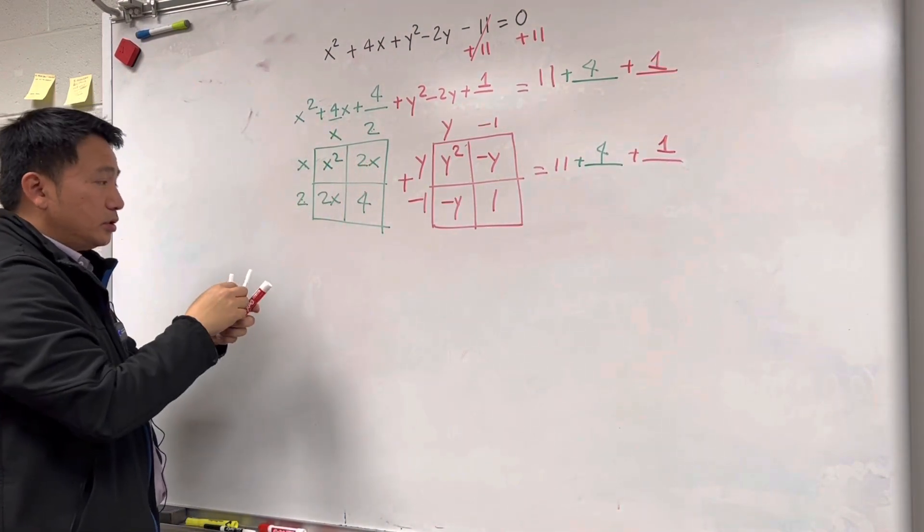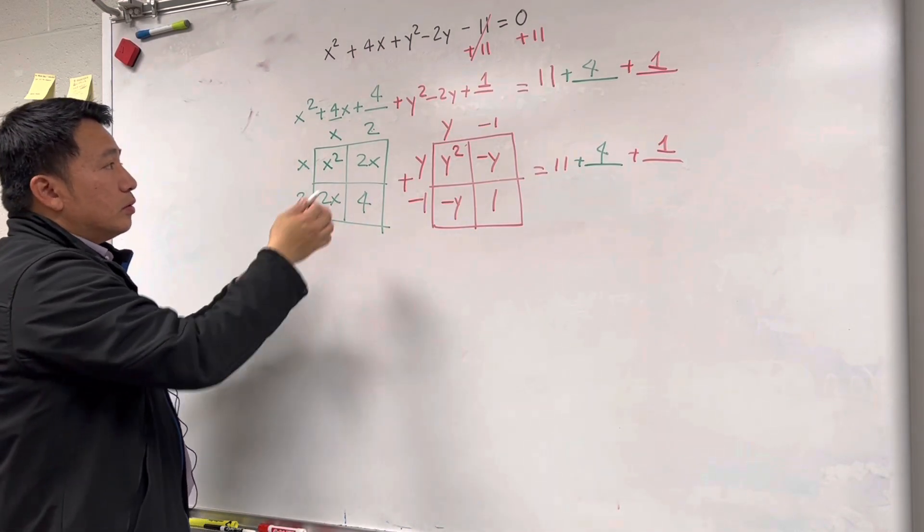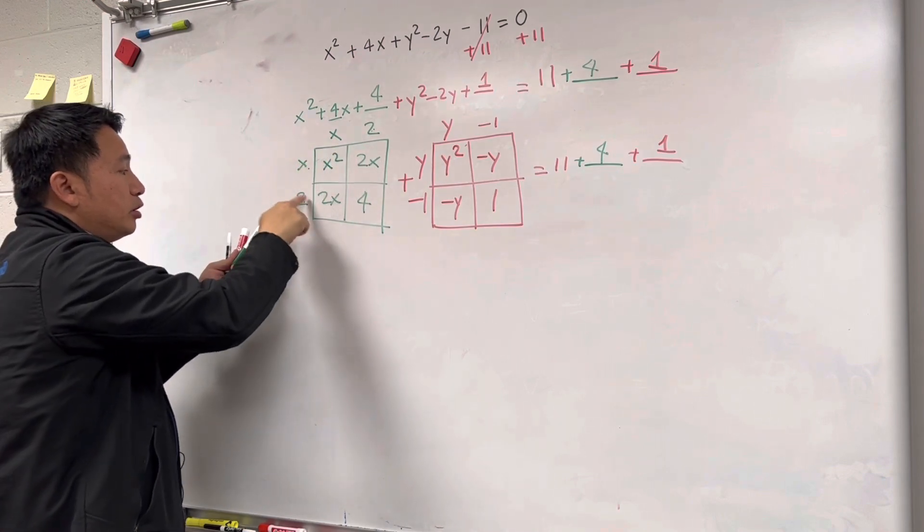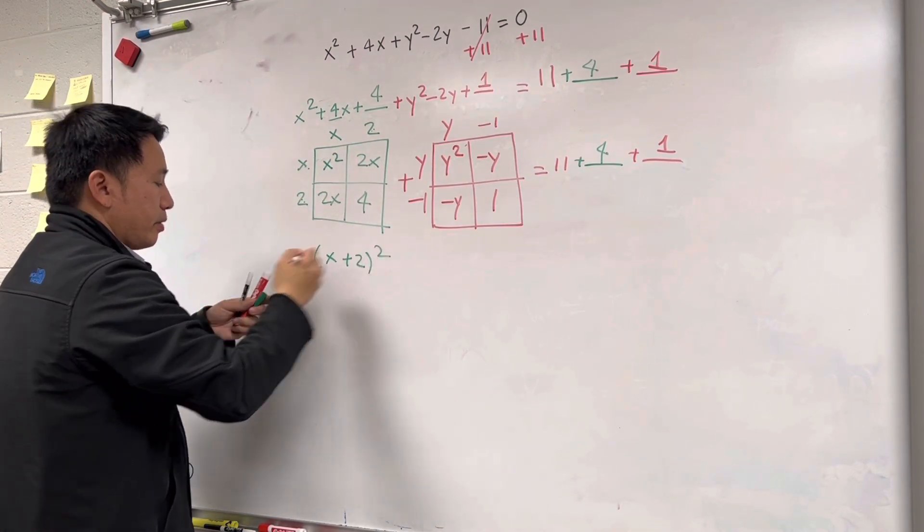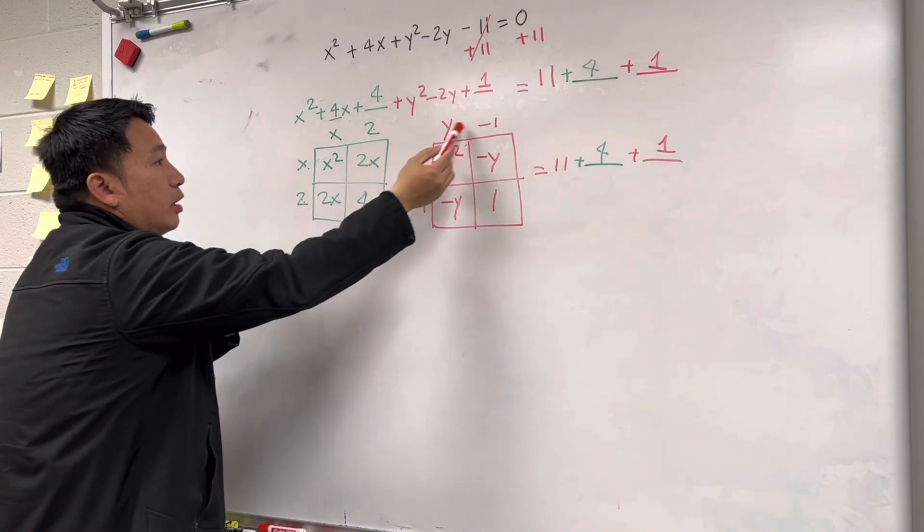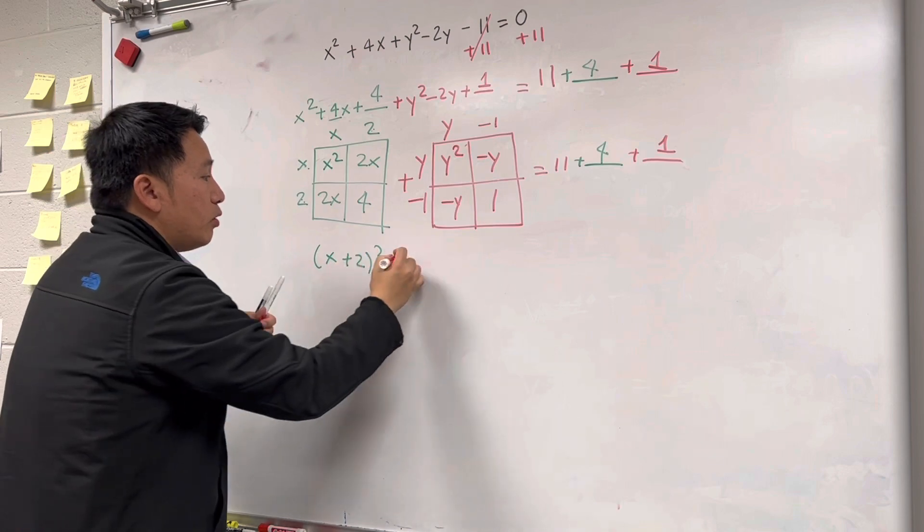Now, it's easy to form, okay, it's easy to form the equation, right? So, you know, x plus 2 times x plus 2 is x plus 2 squared. y minus 1 times y minus 1 is y minus 1 squared.